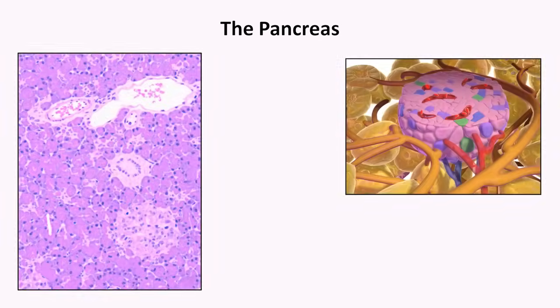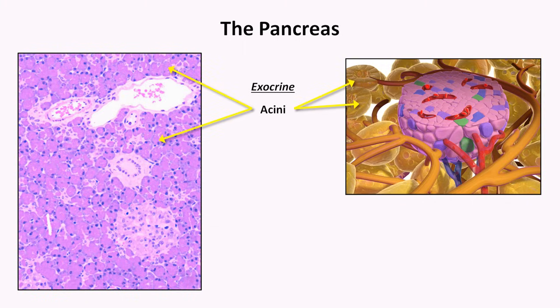When viewed microscopically, the interesting nature of the pancreas becomes more apparent. Here are two microscopic views: a histology slide on the left and an artistic rendering on the right. We can see that the organ appears to be composed of two discrete types of tissues, each of which corresponds to one of the pancreas' two major physiologic roles. The first tissue type is the acini, or acinus when singular. The acini are responsible for the pancreas' exocrine function by secreting digestive enzymes into the duodenum via the network of pancreatic ducts.